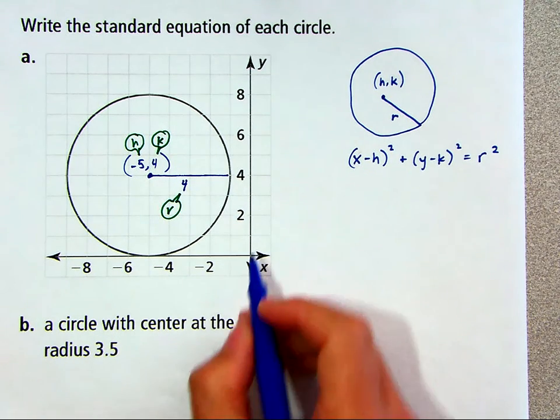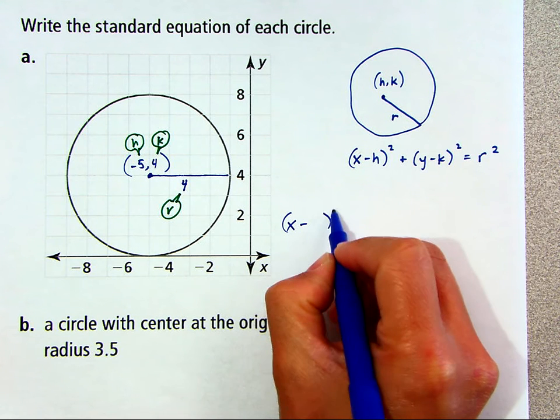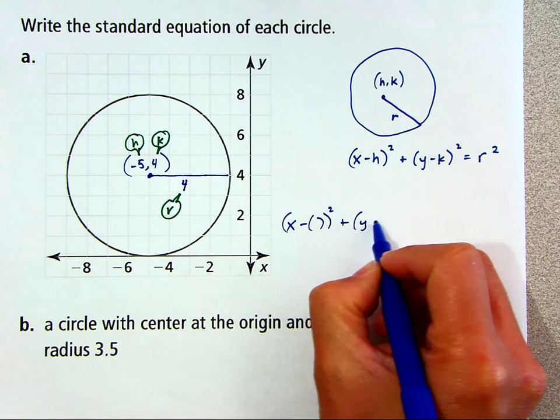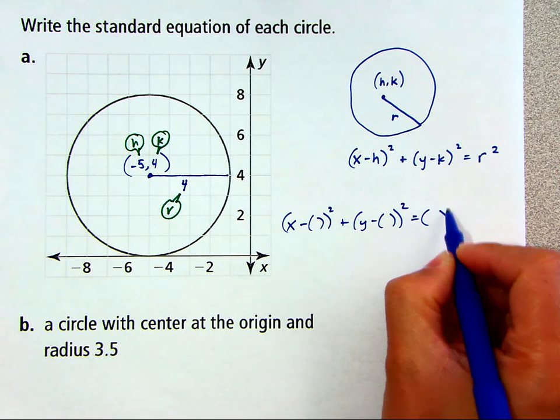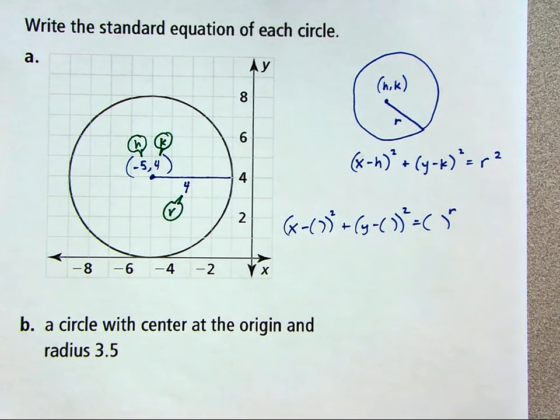Let's write it over here. So it's going to be x minus h squared plus y minus k squared equals r squared. So I just put empty parentheses or placeholders there. Now I'll just substitute the values.